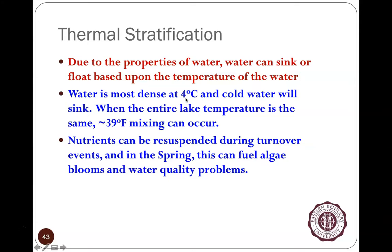When the entire lake temperature reaches about the same — around 39°F — mixing can occur. When all the water is the same temperature, nutrients can be resuspended. In a nutrient-rich lake, if this mixing happens only once every 50 to 100 years, there can be so much accumulated toxic gas released that these can be called killer lakes — they can actually kill people and animals.